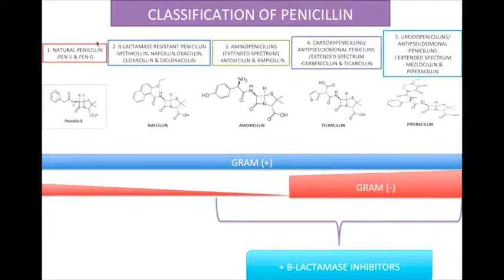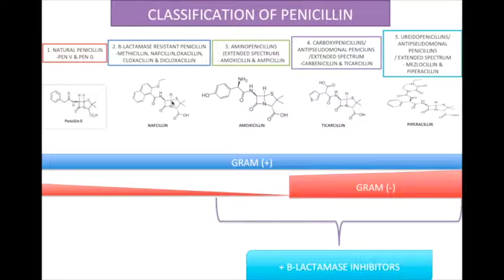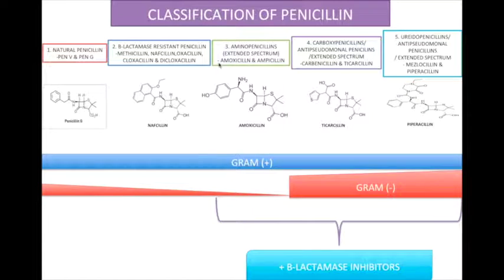The second group is the beta-lactamase resistant penicillins, which include methicillin, nafcillin, oxacillin, cloxacillin, and dicloxacillin. All drugs in this group contain a bulky side chain. This bulky group acts as protection against beta-lactamase, thus preventing degradation of the beta-lactam ring. The third group is the aminopenicillins, which have an extended spectrum. This includes amoxicillin and ampicillin. Both drugs are similar to penicillin G in activity against gram-positive organisms but are weaker than the latter. They are also similar to chloramphenicol in activity against gram-negative organisms. Aminopenicillins are acid resistant but are not penicillinase resistant.